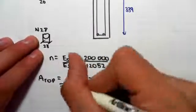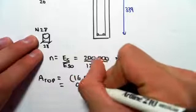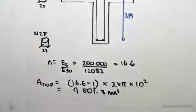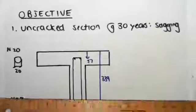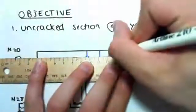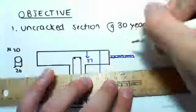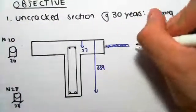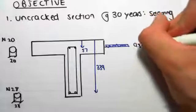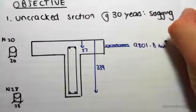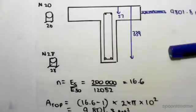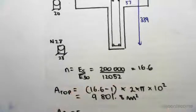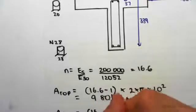Working that out gives 9801.8 mm². That is the new equivalent concrete area replacing the top steel bars. We then find the area of the bottom steel using the same approach with n = 16.6.